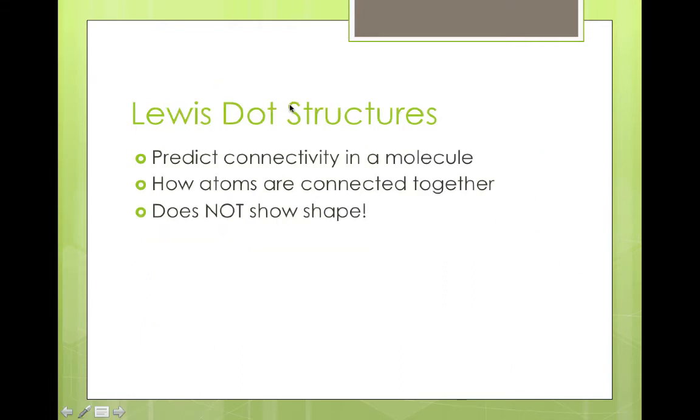So very quickly, let's go through the review concepts here. We'll start with Lewis dot structures. They predict connectivity in a molecule, how atoms are connected together, but not any information about the shape. And as we said before, it allows us to take a formula for a compound and create a map of where the atoms are and how they're linked together.